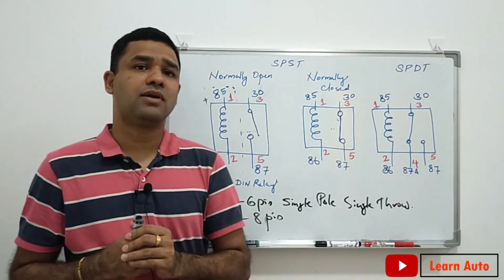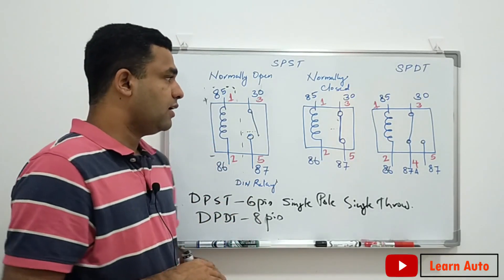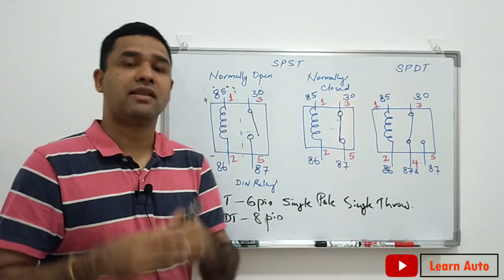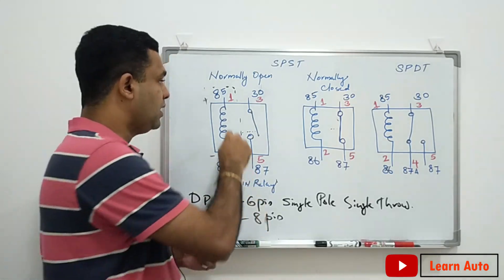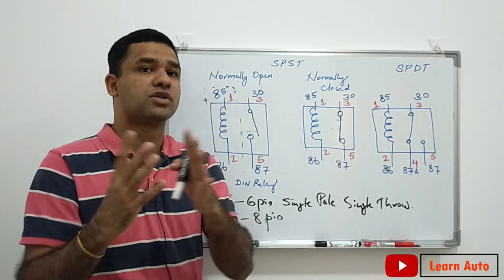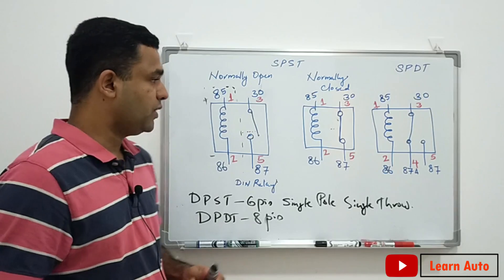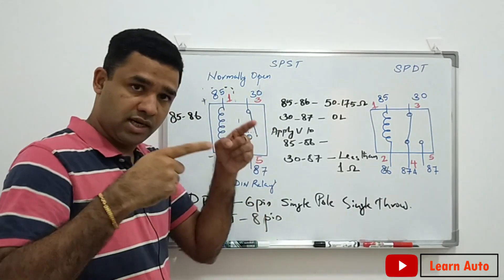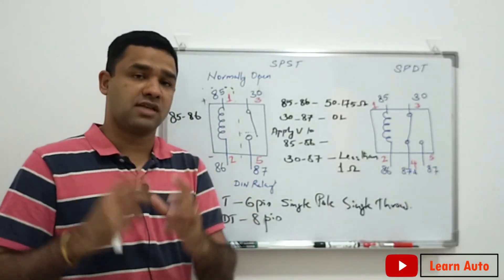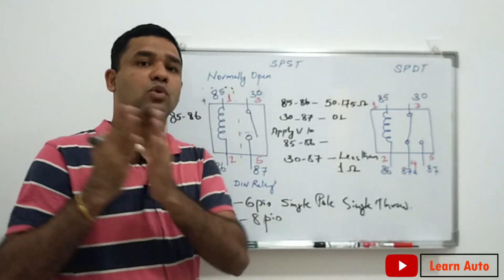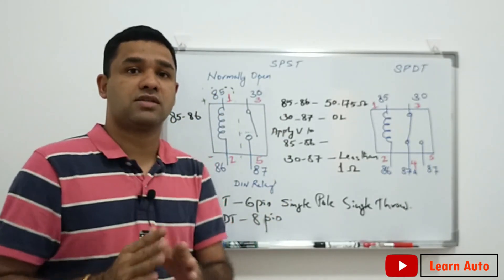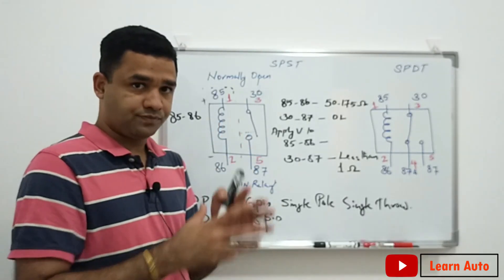Now we will check the pin numbers 1 and 2, pin number 3 and 5 — the power supply connections. For a 5-pin relay the pins are 1, 2, 3, 4, 5. We will check pin number 2 and pin number 3. Now we will check the coil resistance.